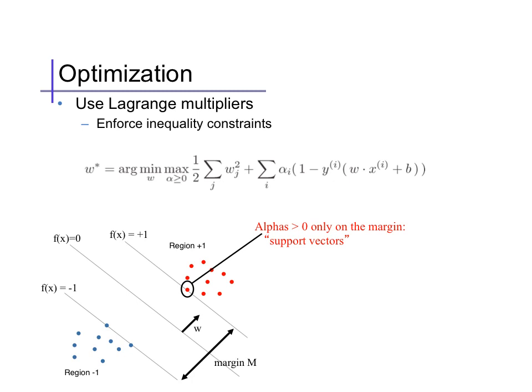So we can simply optimize our Lagrangian over both the parameters w and b and the Lagrange multipliers alpha. The geometric consequence of complementary slackness is that the alpha_i are only non-zero for points where the margin constraint is tight. In other words, points on the boundary of the margin. These points are called the support vectors.